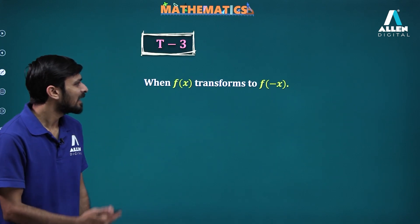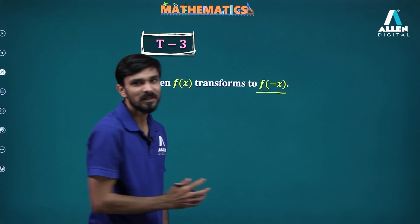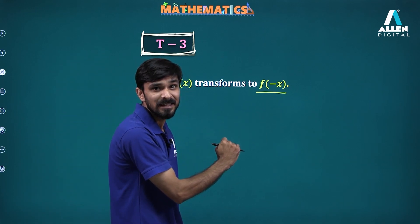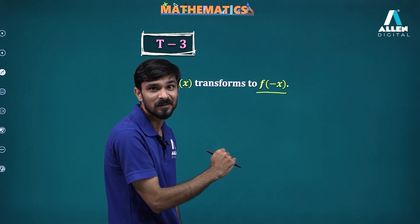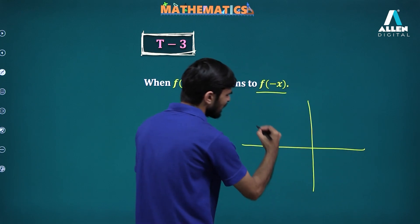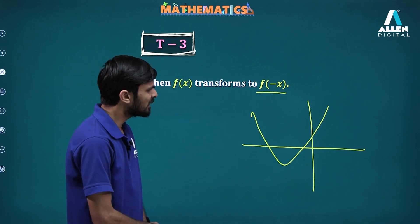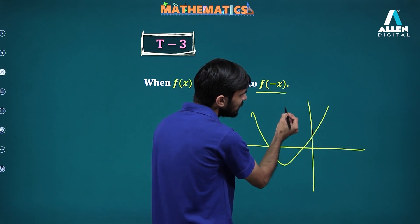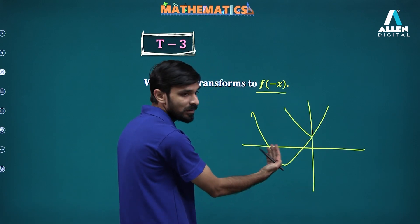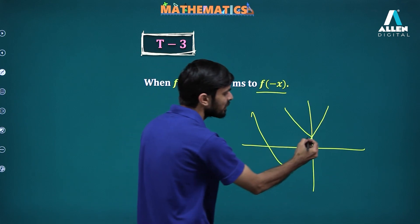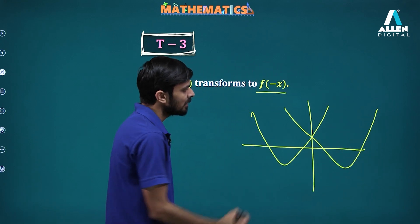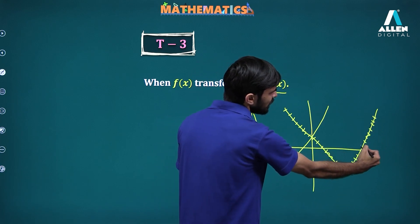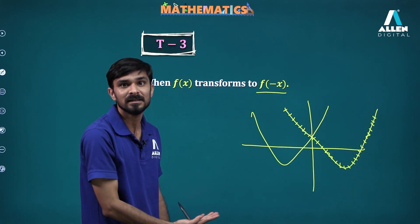Let's see another type — when we have to transform f(x) to f(minus x). Think of the function as a process where you give an input and get an output. Here, when you give positive input, it acts like a negative input and vice versa. So whatever output you were getting from the positive inputs, you will now get from the negative inputs. We have just taken the reflection of the graph in the y-axis — that is what you are going to do.